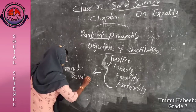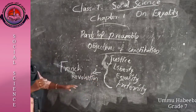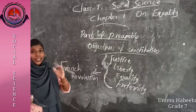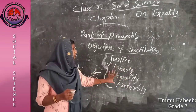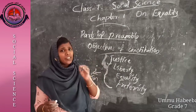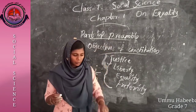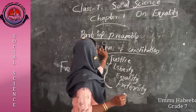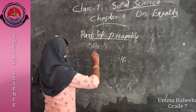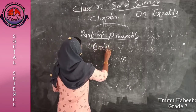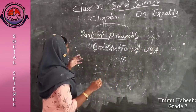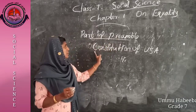Liberty, equality, and fraternity are the contributions of the French Revolution. These three terms are taken from the French Revolution. Also, do you know from which constitution we take the concept of preamble? From the constitution of the USA, we take the term preamble. The preamble is taken from the constitution of the USA.